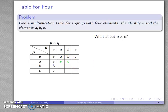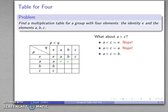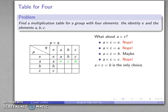Now let's consider A times C. It could be E — it can't be, because I already have A inverse. A times C could be A — that makes C the identity, so we can't have that. A times C equal to B — I see no obvious reason why that can't be, so let's hold on to that. A times C equal to C — that makes A look like the identity element, so we can't have that. So A times C equals B is our only possibility, and I'll fill that in.